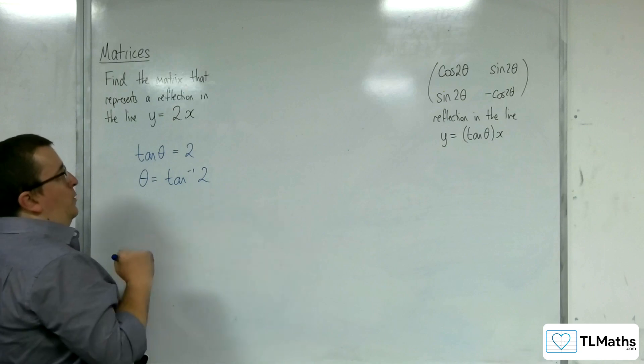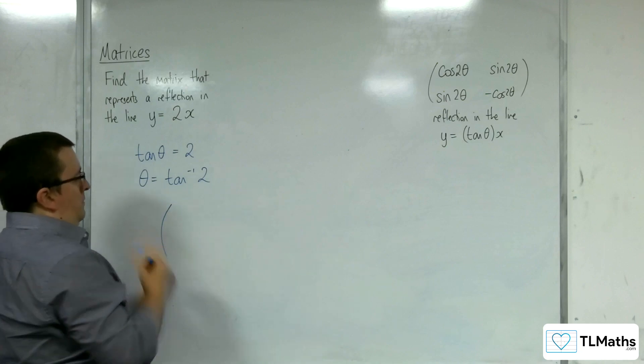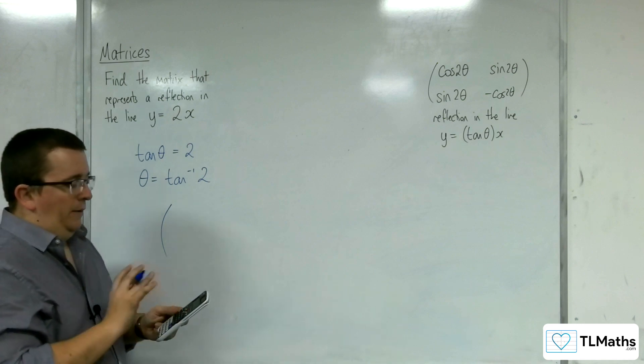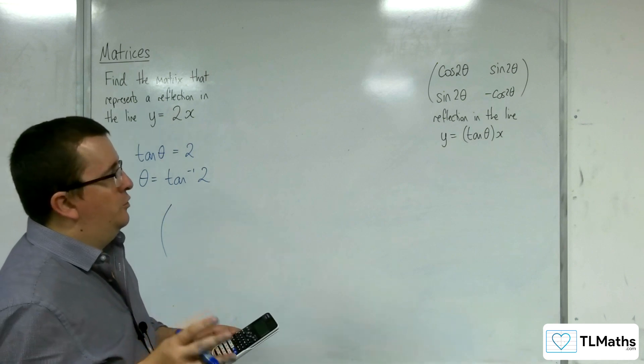So that would be inverse tan of 2. My calculator gives 63.4349 degrees.